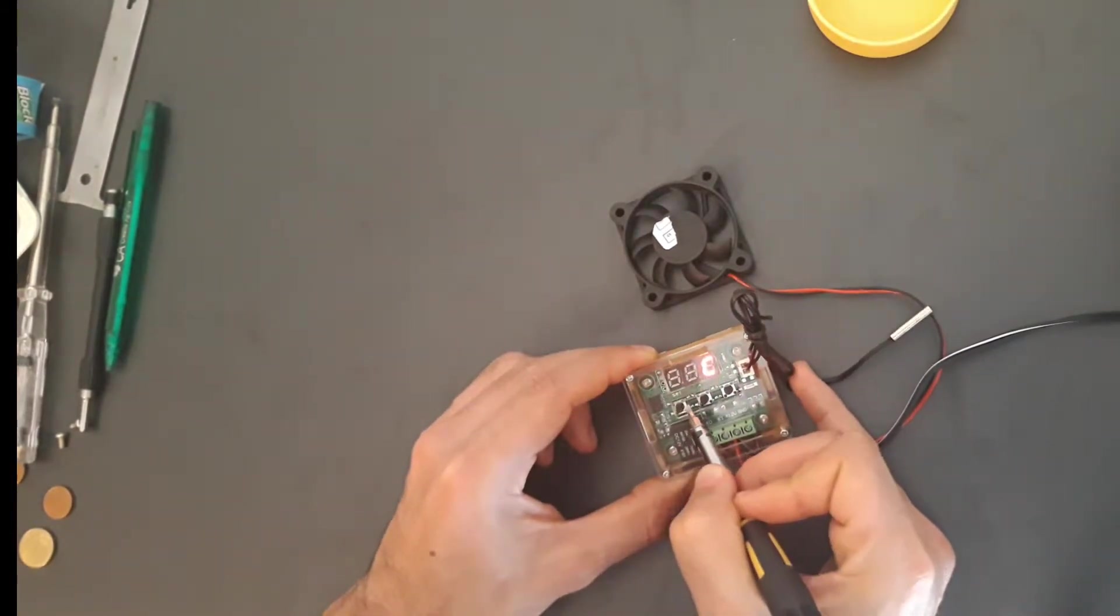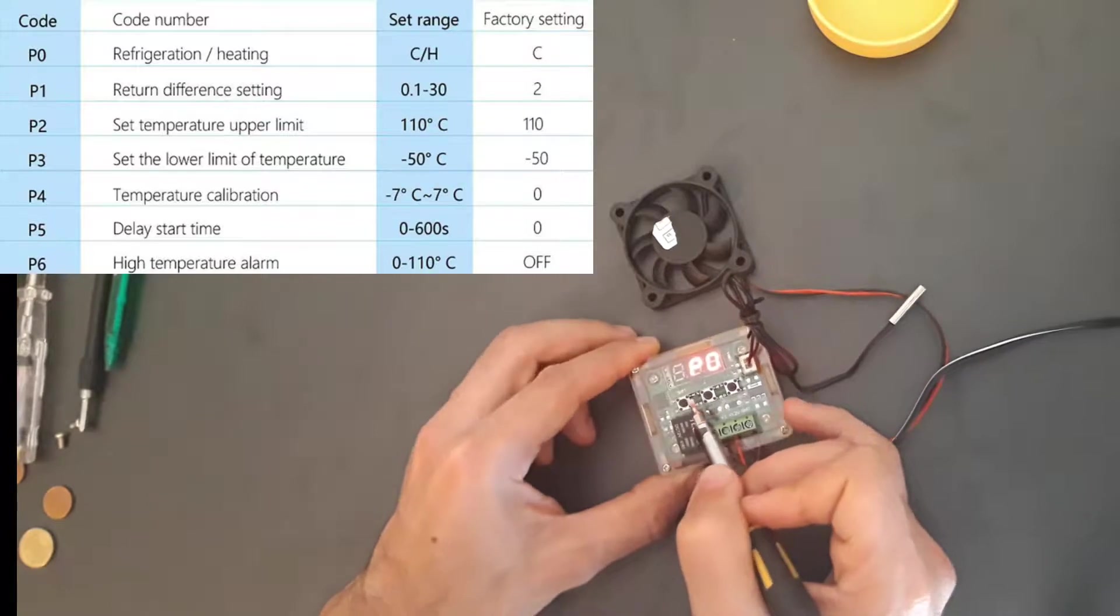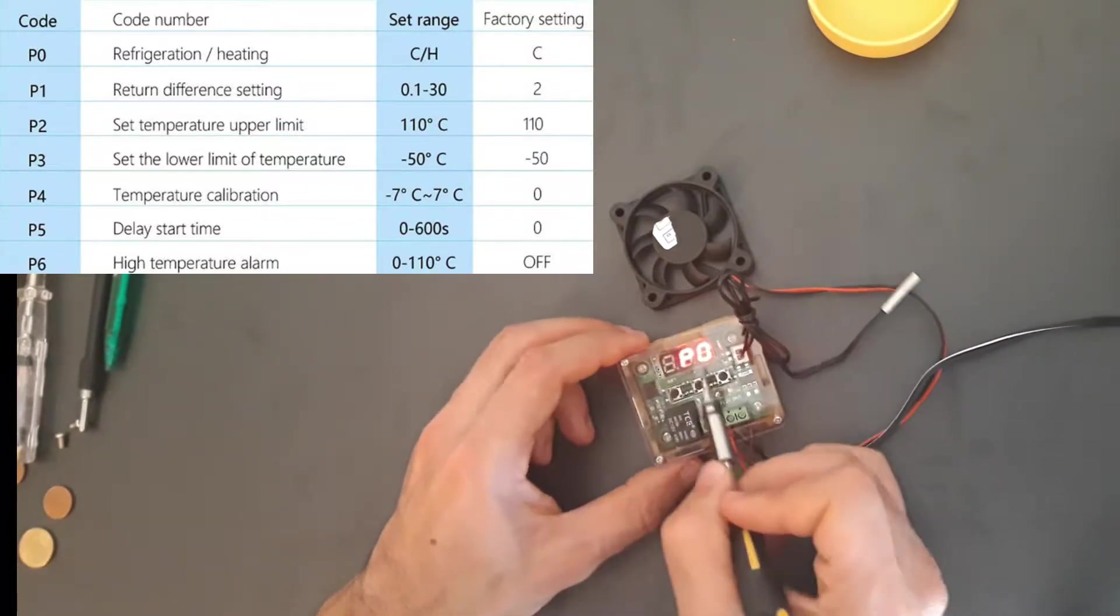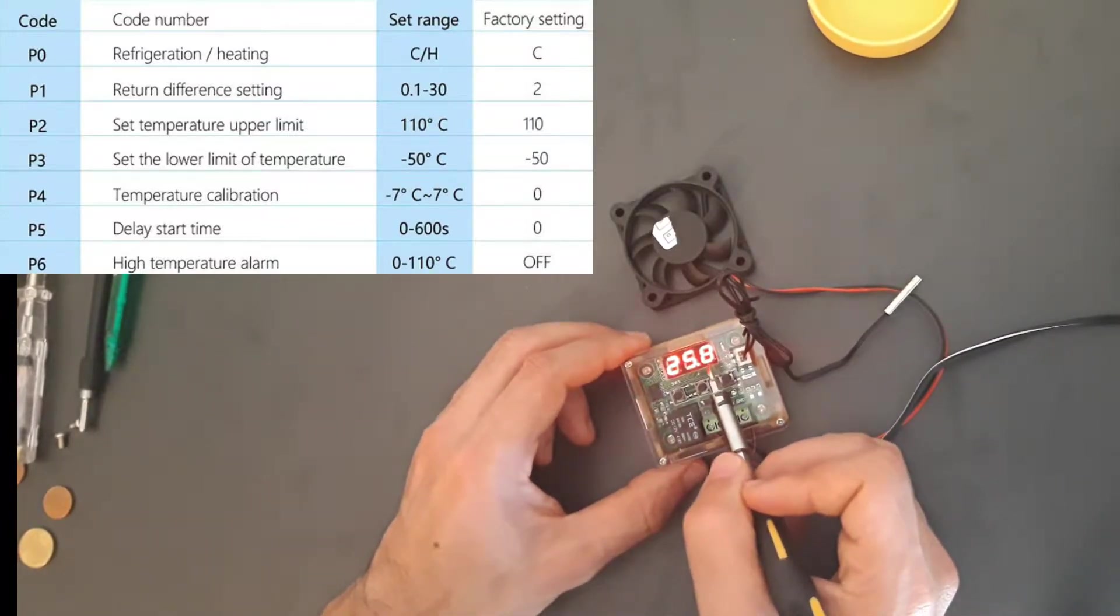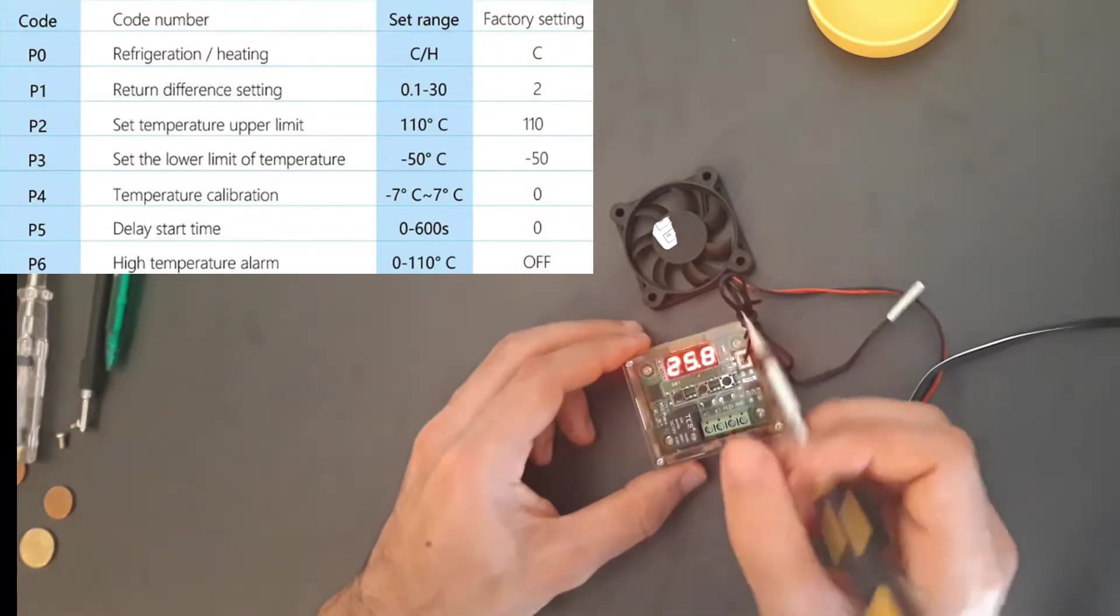There's a series of programs here: zero, one, two, three, four, five, six. So I'm just going to explain to you what each one of these does. P0, I'll have this in the description, P0 is where you choose if you want it to cool or to heat.